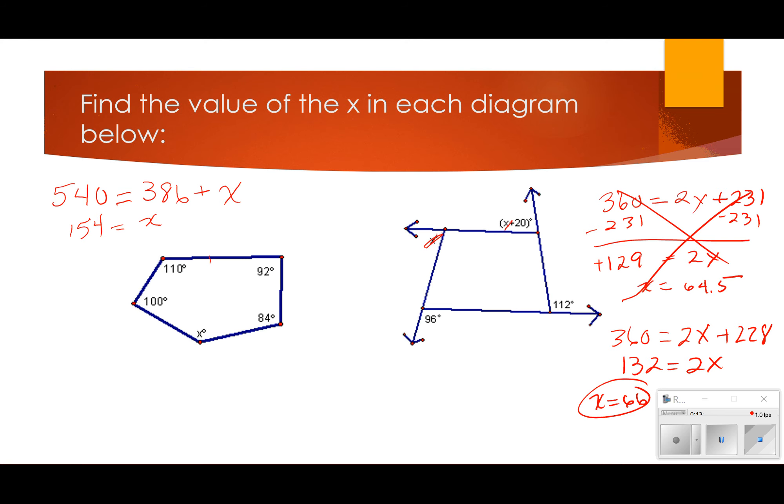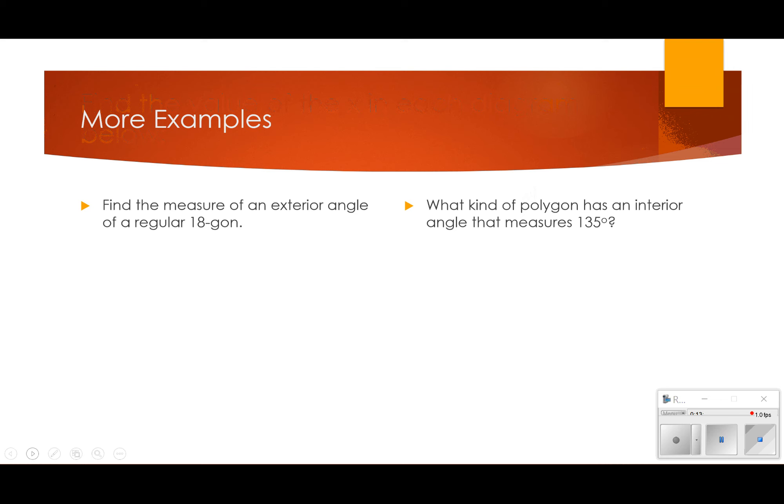A couple more examples, real quickly. Find the measure of an exterior angle of a regular 18-gon. Exterior. Sum of all of them is 360. So, this is just 360 divided by 18, which should be 20. And so, the measure of one exterior angle of an 18-gon is 20.